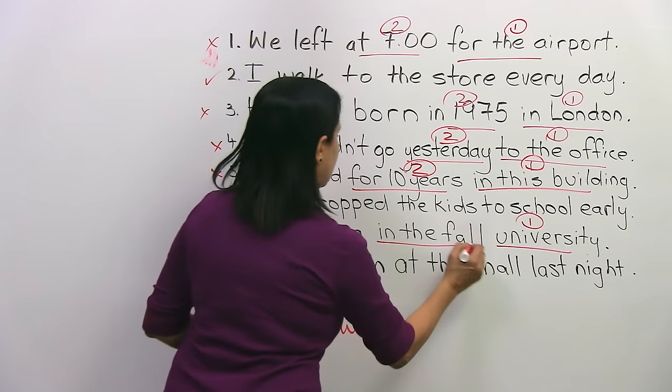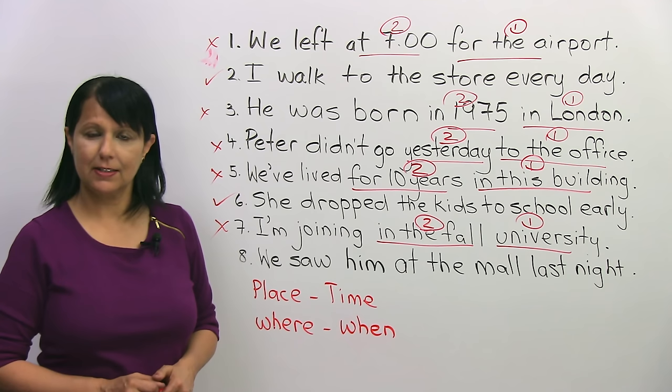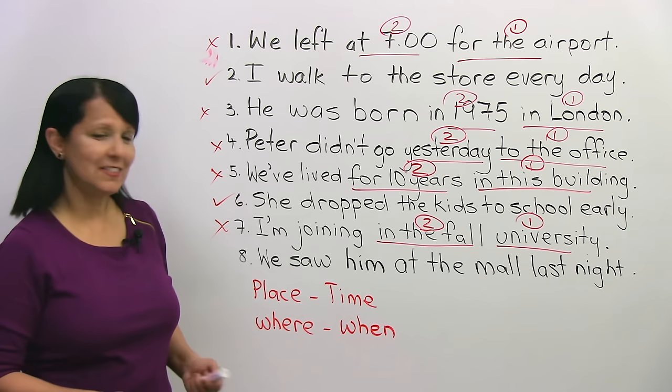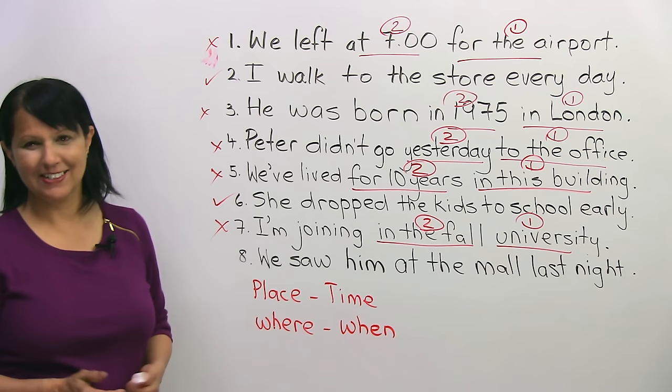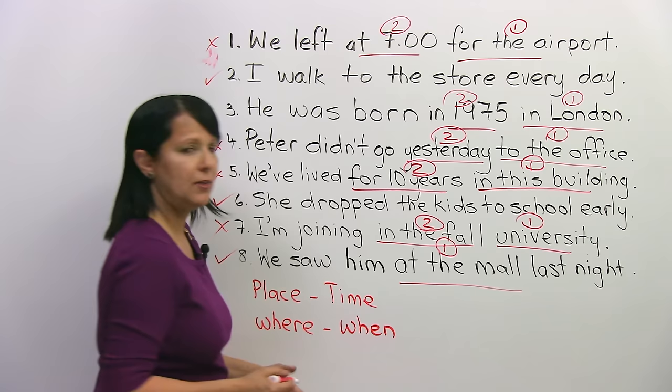And the last one: 'We saw him at the mall last night.' Is that right or wrong? That is actually right. We saw him where? At the mall. When? Last night. Place before time — correct.